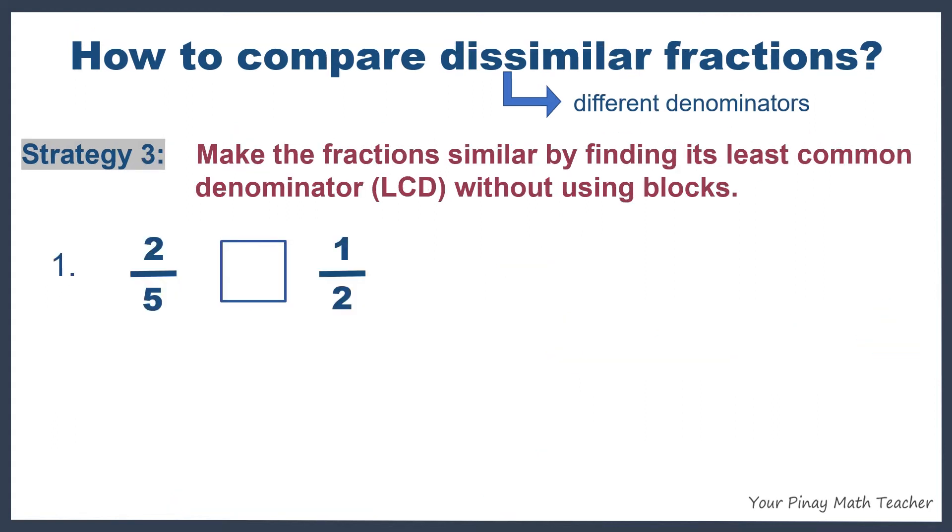Strategy three, make the fraction similar by finding its least common denominator or LCD without using blocks. Number one example, two-fifths and one-half are dissimilar fractions because they have different denominators. We have to make them similar by finding the LCD or least common multiple.